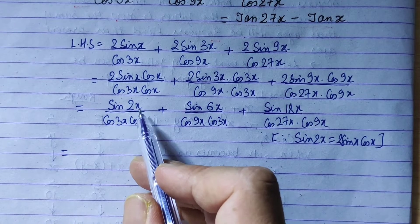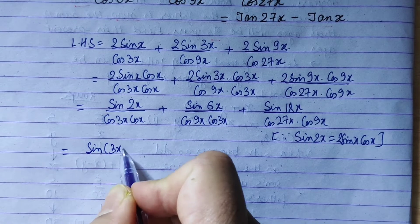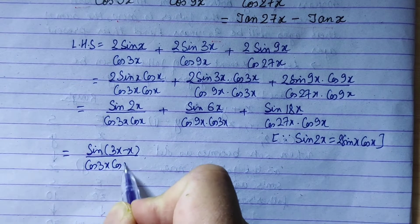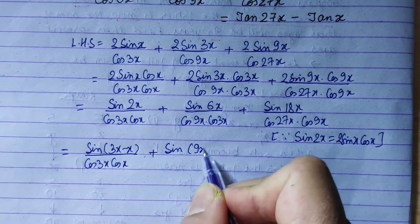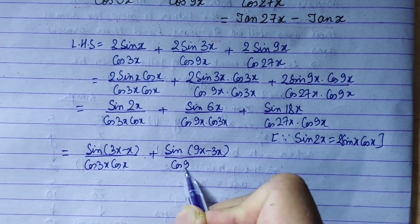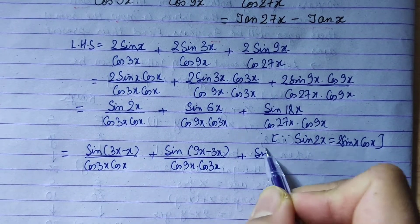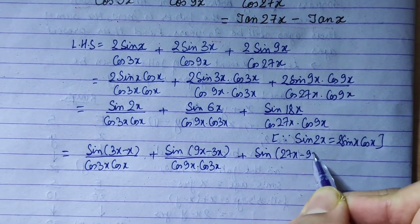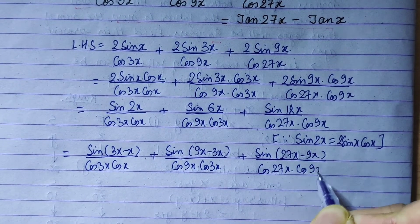Now let us subtract and rewrite. We write sin(3x minus x) by cos3x cosx, plus sin(9x minus 3x) by cos9x cos3x. Lastly, 18x is 27x minus 9x, so we write sin(27x minus 9x) by cos27x into cos9x.